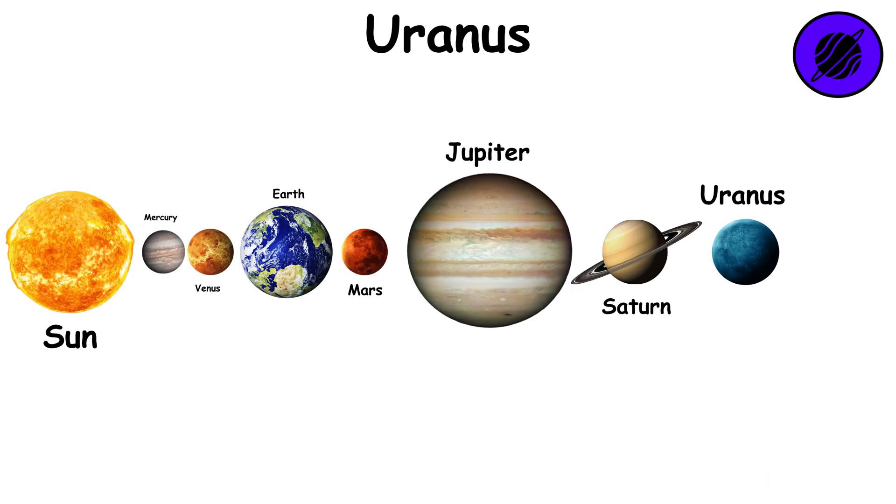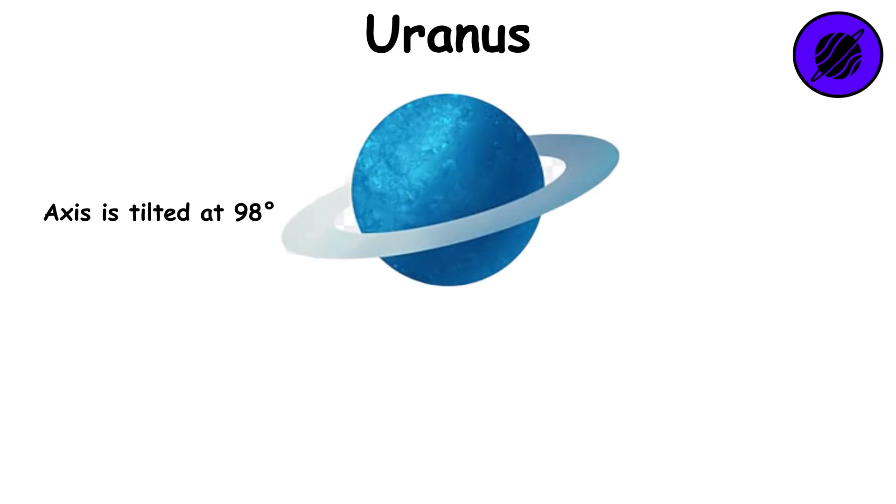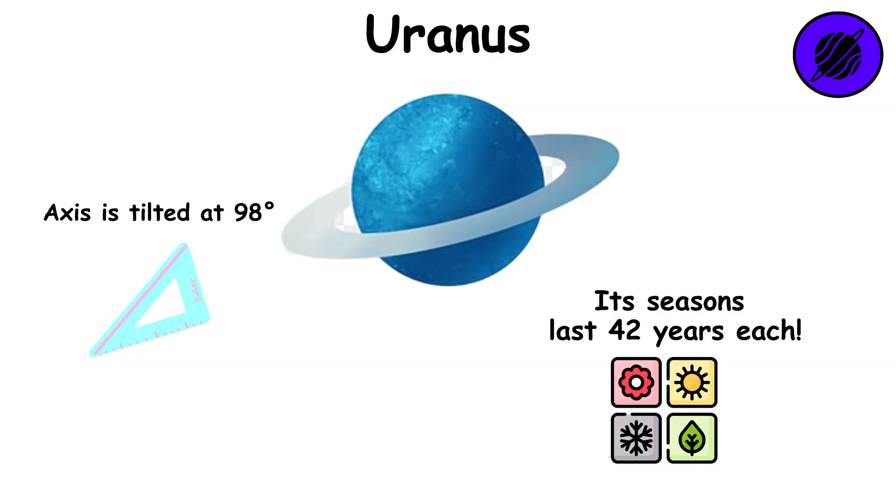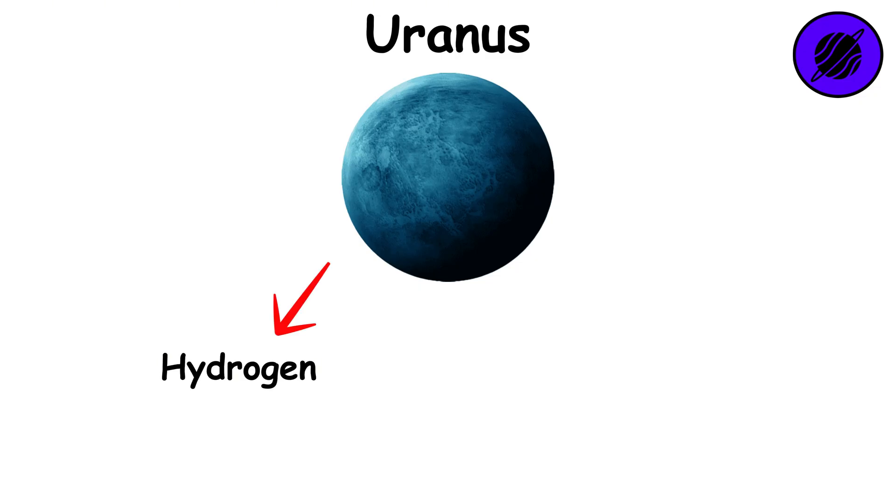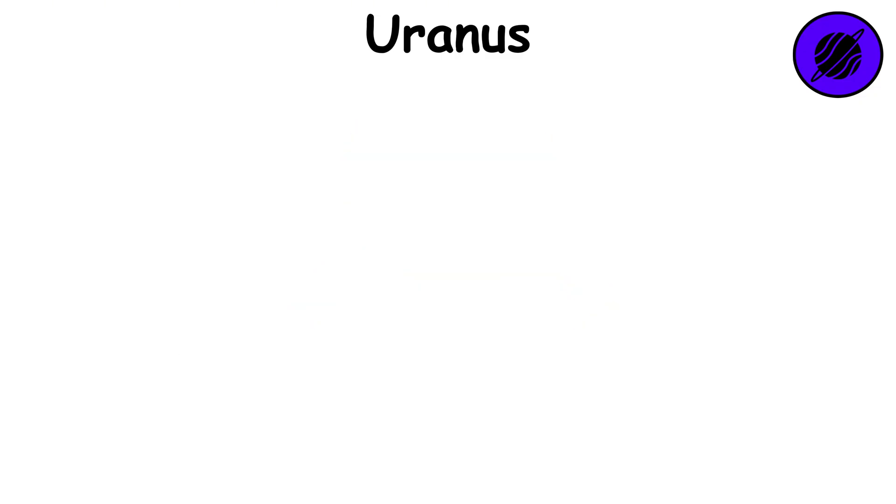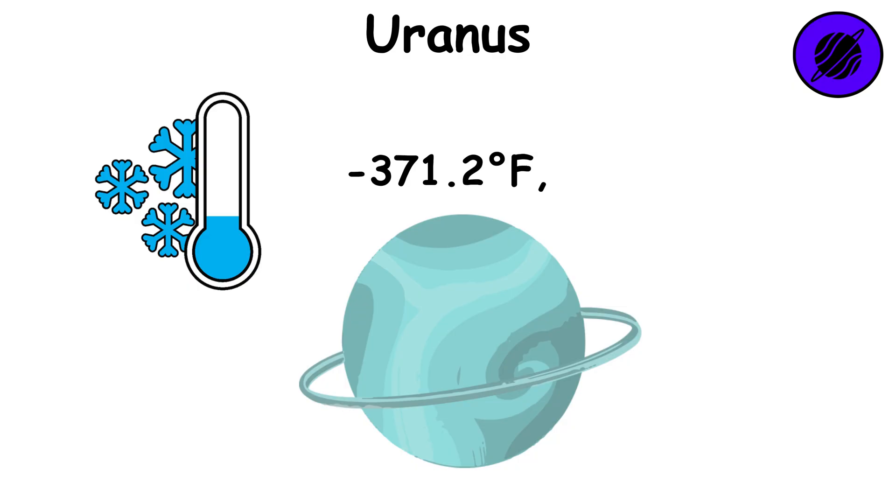Uranus is the seventh planet from the Sun, an icy giant with a unique feature. It rotates on its side, as its axis is tilted at 98 degrees. As a result, its seasons last 42 years each. Uranus is mostly made of hydrogen, helium, and methane, which gives it its blue color. The average temperature is negative 371.2 degrees Fahrenheit, making it the coldest planet in the solar system.